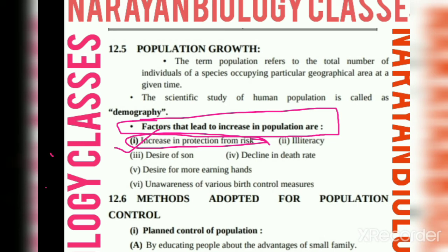The second factor is illiteracy. Illiteracy means that people are less educated, and because of this the population will increase.